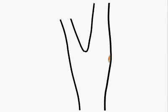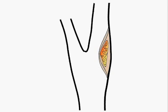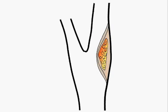Atherosclerosis can occur in the carotid artery and lead to the growth of plaque. Plaques often form on the outer wall of the artery in a region where shear forces are small. This process occurs over decades.